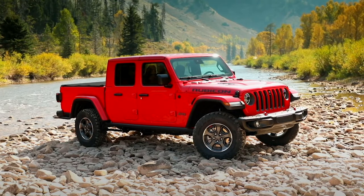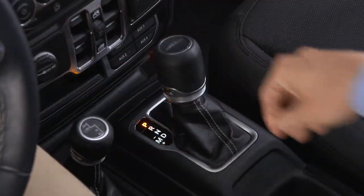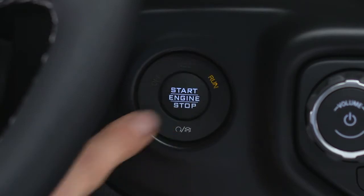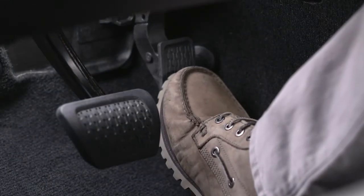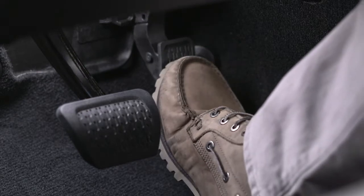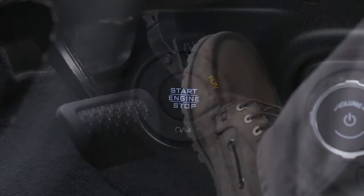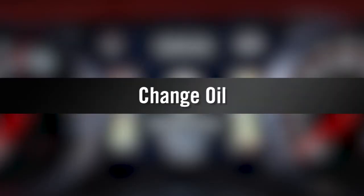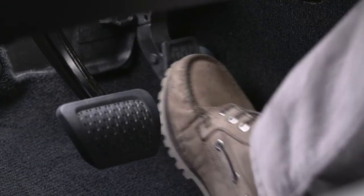To reset the system after scheduled maintenance, shift into park and put the ignition into the on-run position. Don't start the engine. Fully press the accelerator pedal slowly three times within 10 seconds, then cycle the ignition off. If you still see the message when you start the vehicle, the system did not reset and you'll need to repeat this procedure.